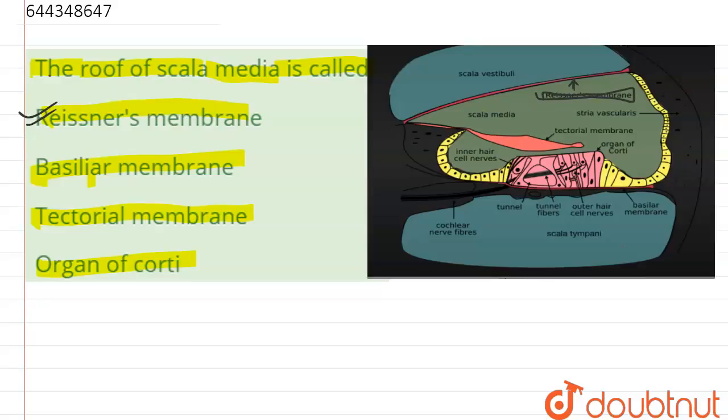Which separates the upper scala, that is scala vestibule, to the median scala. And that is a major function of Reissner's membrane.